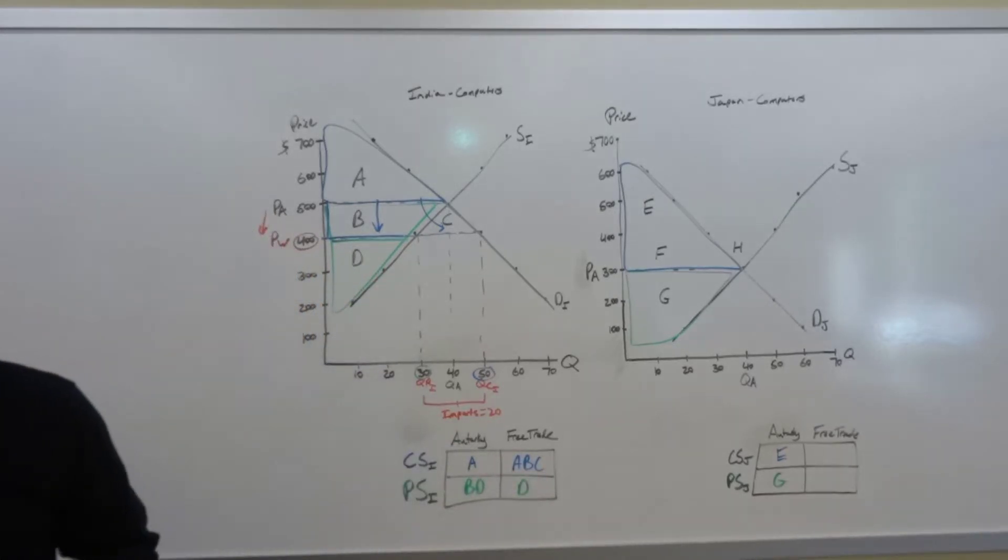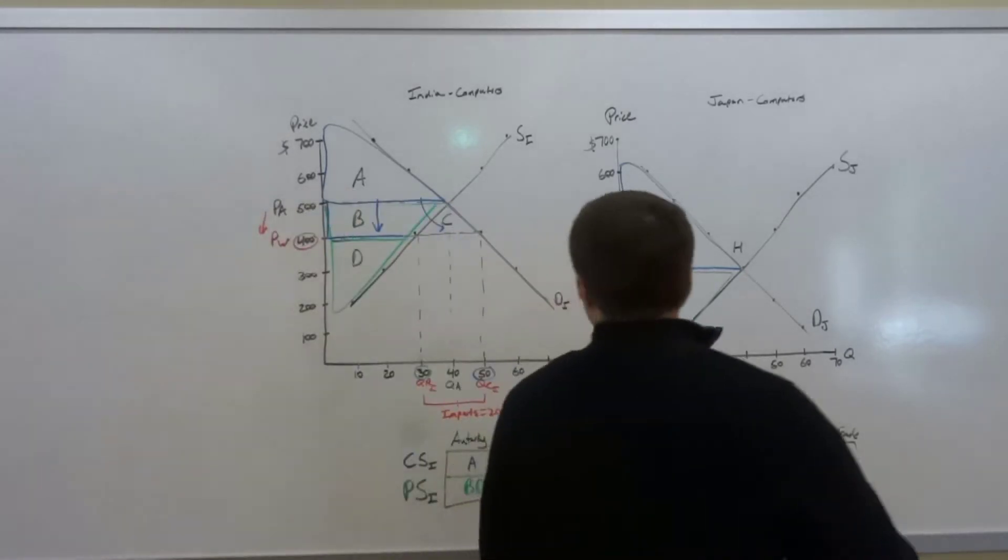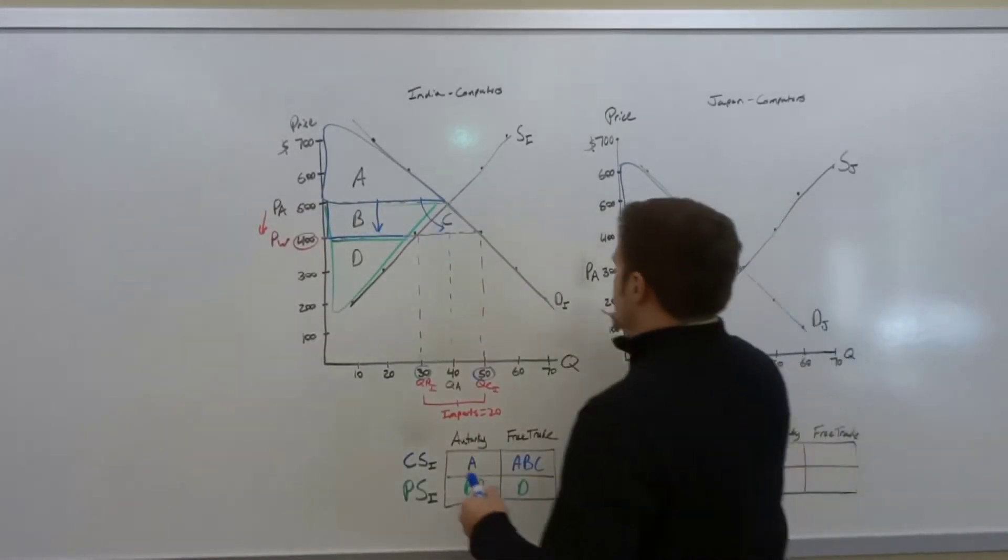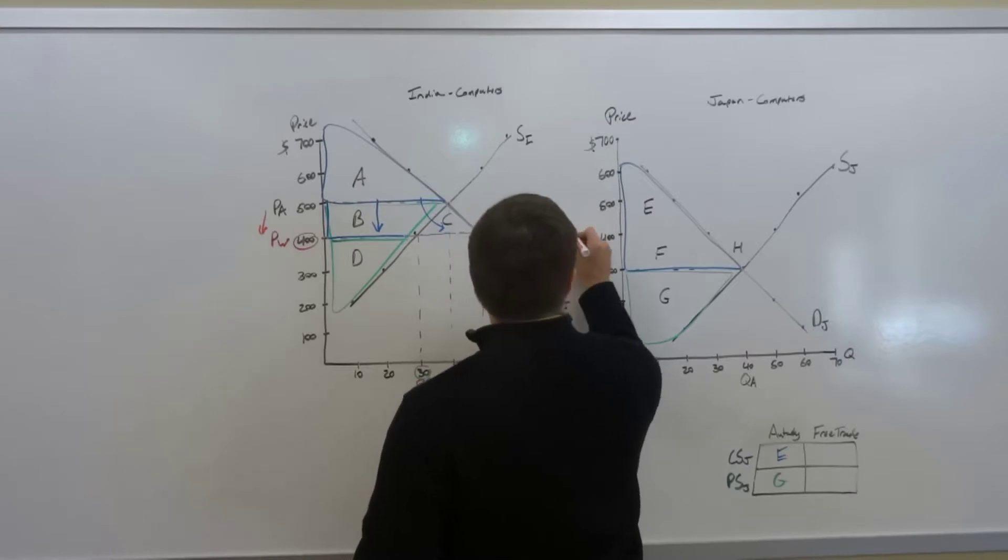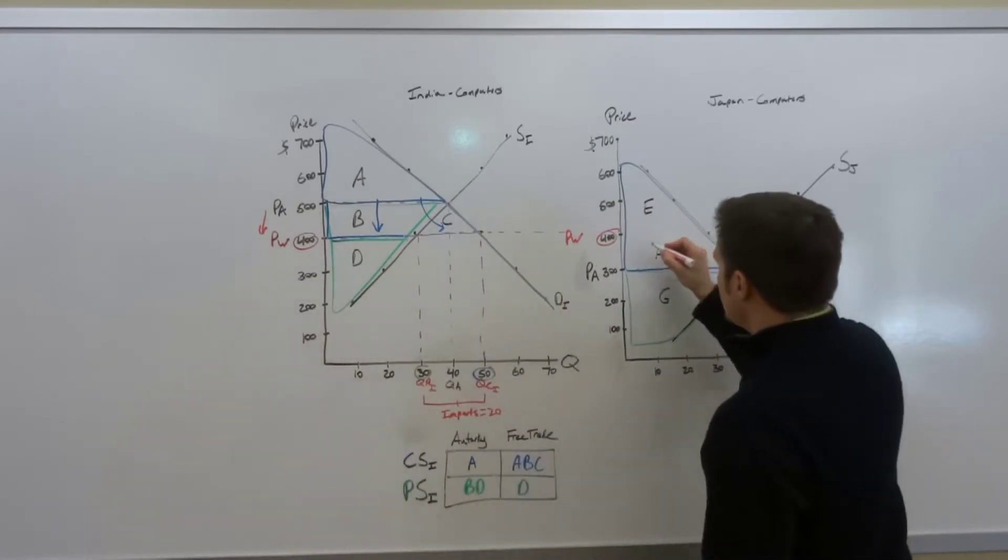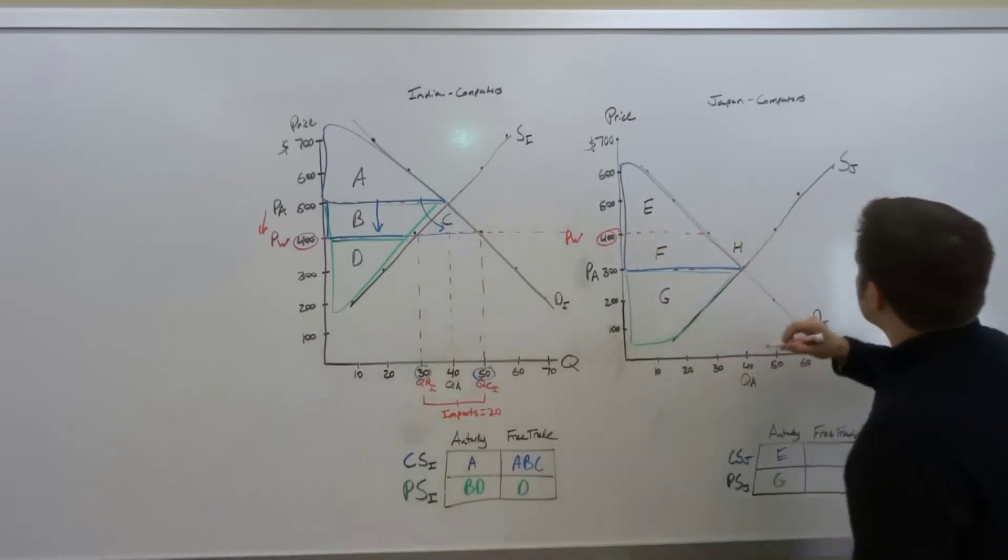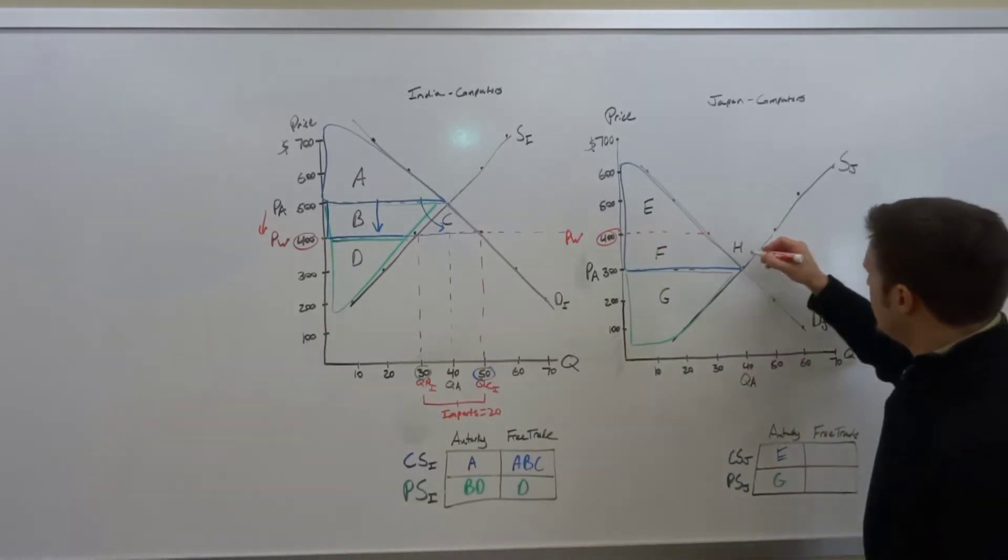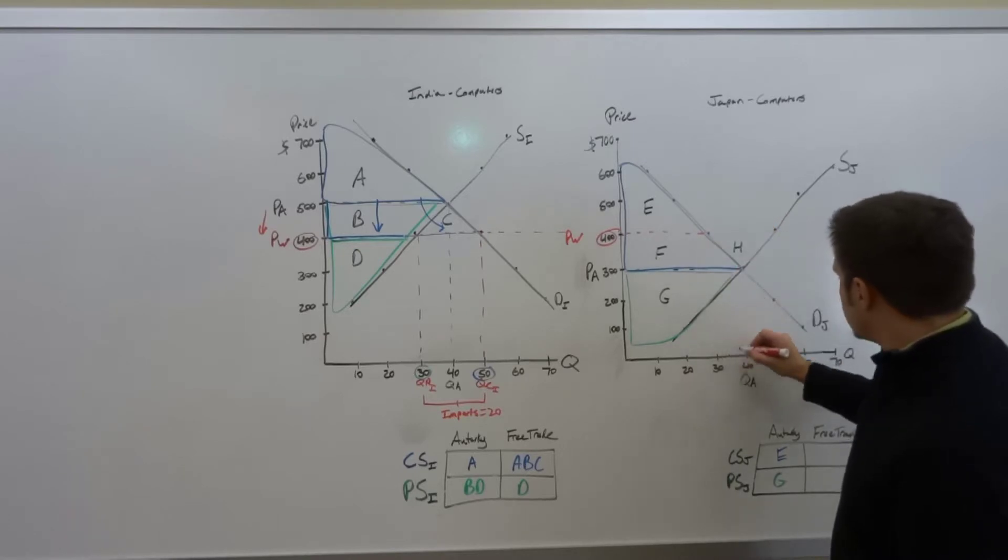Now let's switch gears and go over to our exporting country, that is. So once again, price in the world of 400. Where is this world price going to intersect with the Japanese supply curve or demand curve, that is.